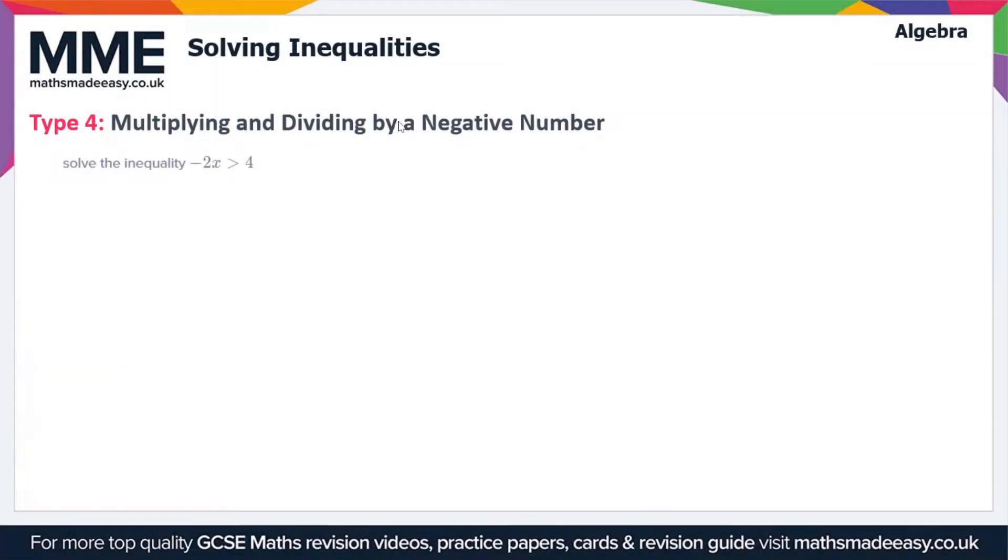So for the most part, when you're solving inequalities, you treat them in much the same way as you would an equation. And you just solve them as though it was an equation where the inequality symbol is the equal sign. There is an exception to this rule, though, and that's when you're multiplying or dividing by a negative number.